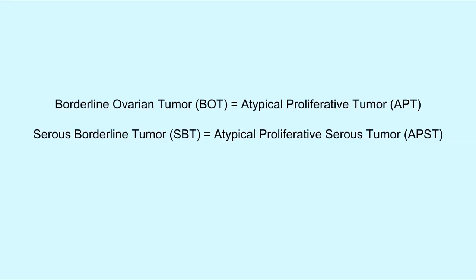Before we begin, we'd like to acknowledge some terminology that you may hear or see in the presentation. Borderline ovarian tumor is synonymous with atypical proliferative tumor, and the subtype being discussed today can be called a serous borderline tumor or atypical proliferative serous tumor.